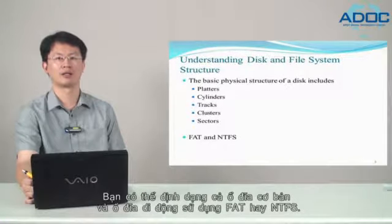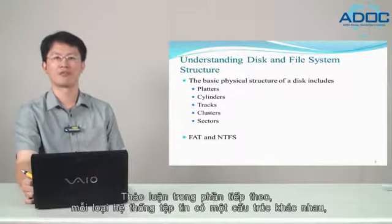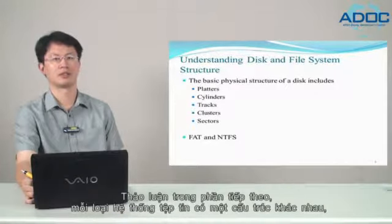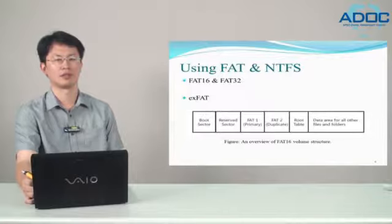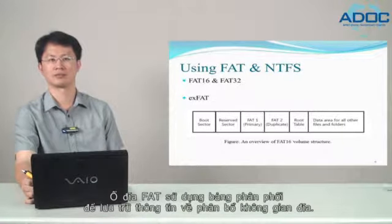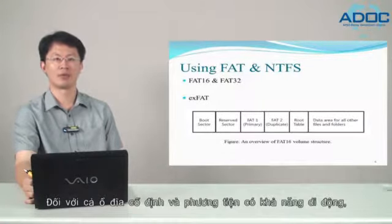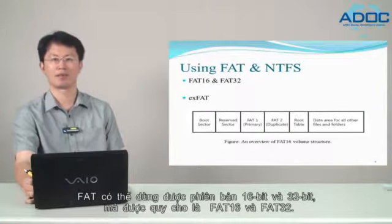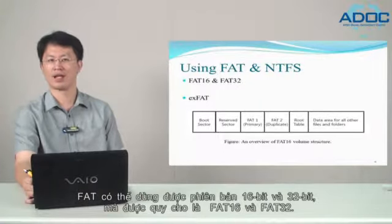You can format both basic volumes and dynamic volumes using FAT or NTFS. Each file system type has a different structure, and there are advantages and disadvantages of each. FAT volumes use an allocation table to store information about disk space allocations. FAT can be used with both fixed disks and removable media, and is available in 16-bit and 32-bit versions — FAT16 and FAT32.